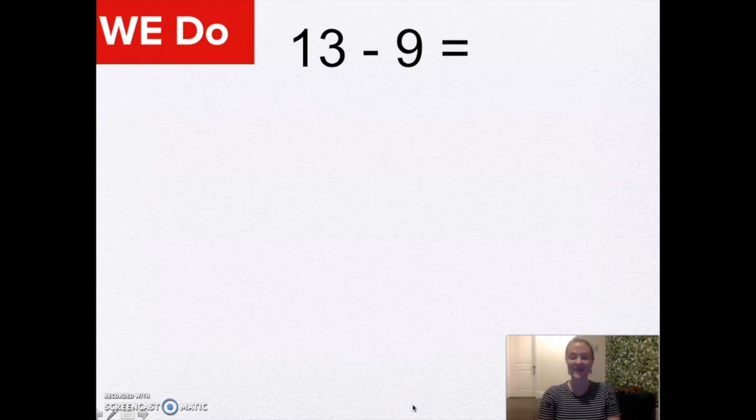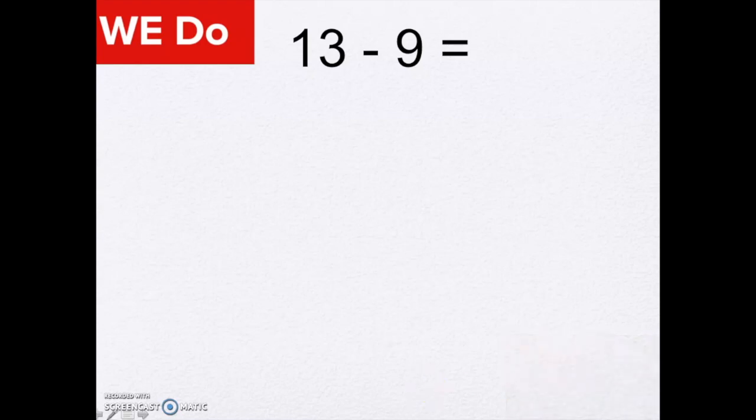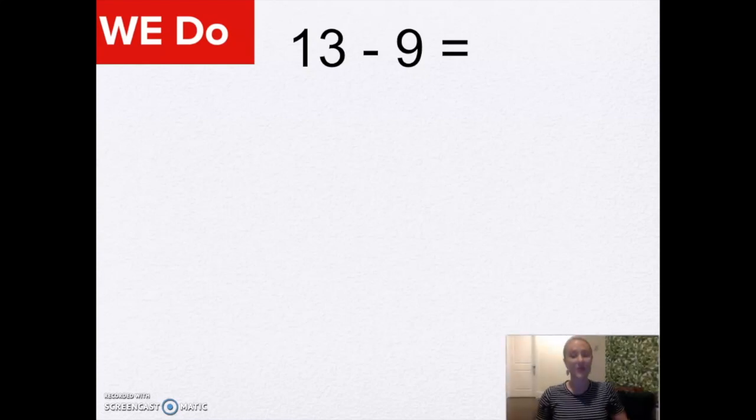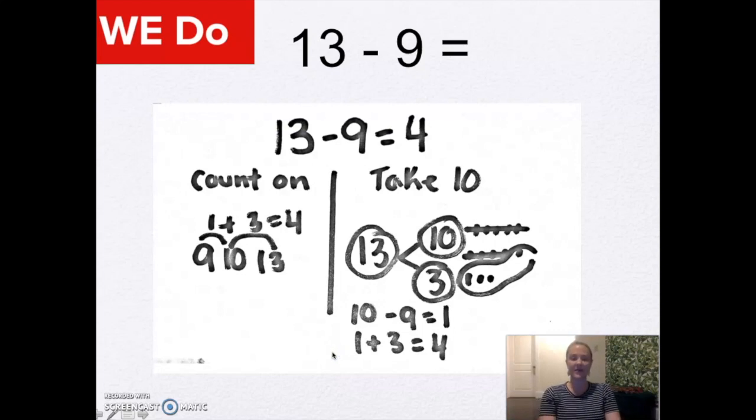All right, let's solve 13 take away 9. You can choose to do the take from 10 strategy or maybe you want to do counting on or maybe you have a more efficient strategy. Go ahead and solve. Great work! I see you're being really careful in checking your work. All right, if you need more time, pause. If you're ready to compare answers, let's compare. 13 take away 9 is 4. You can see that I did the counting on strategy here, and then I also did my take from 10. You don't have to do both strategies. Choose which one feels better for you.